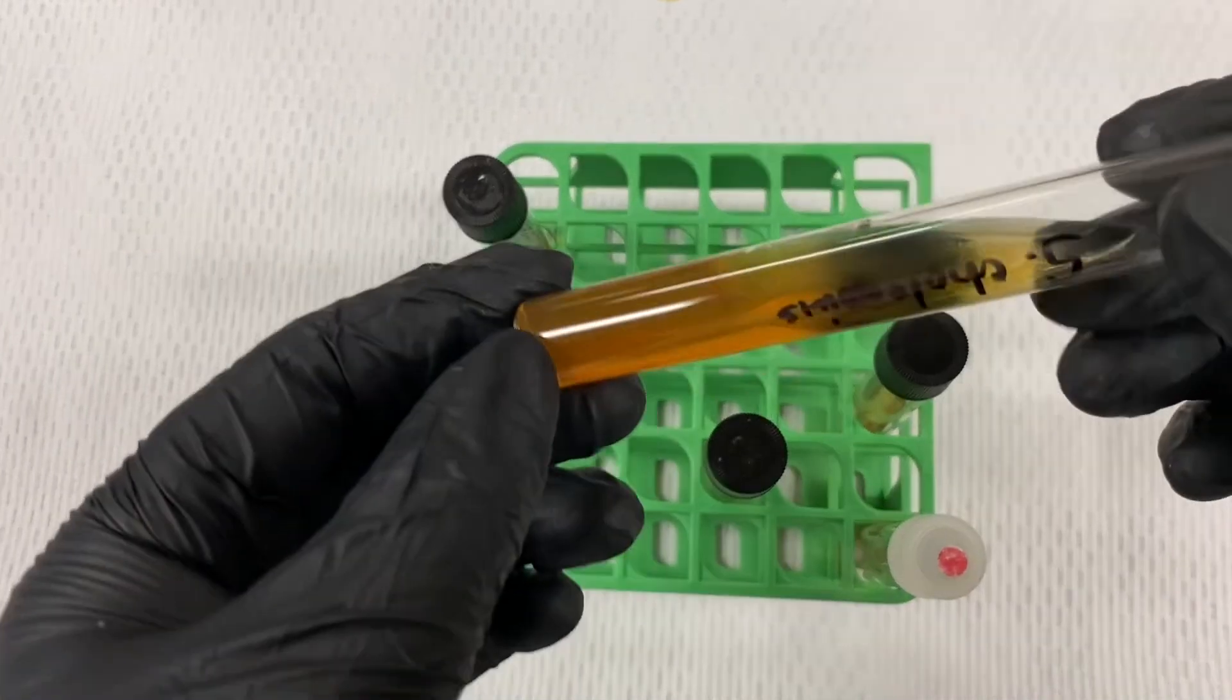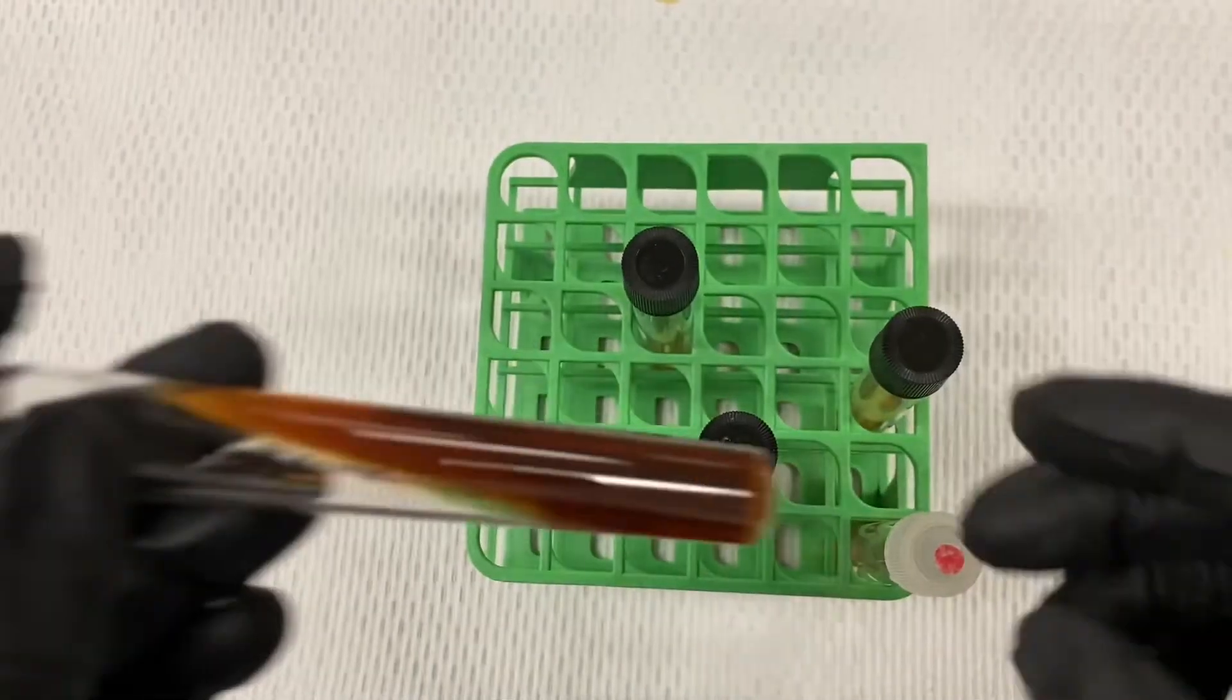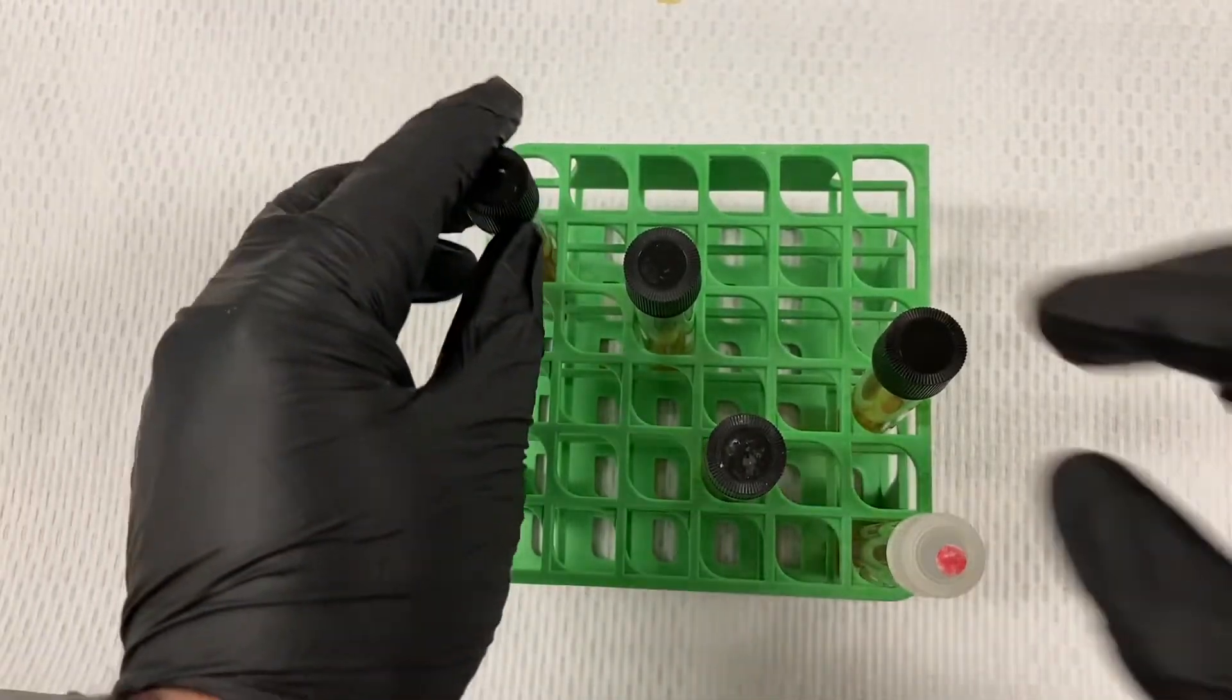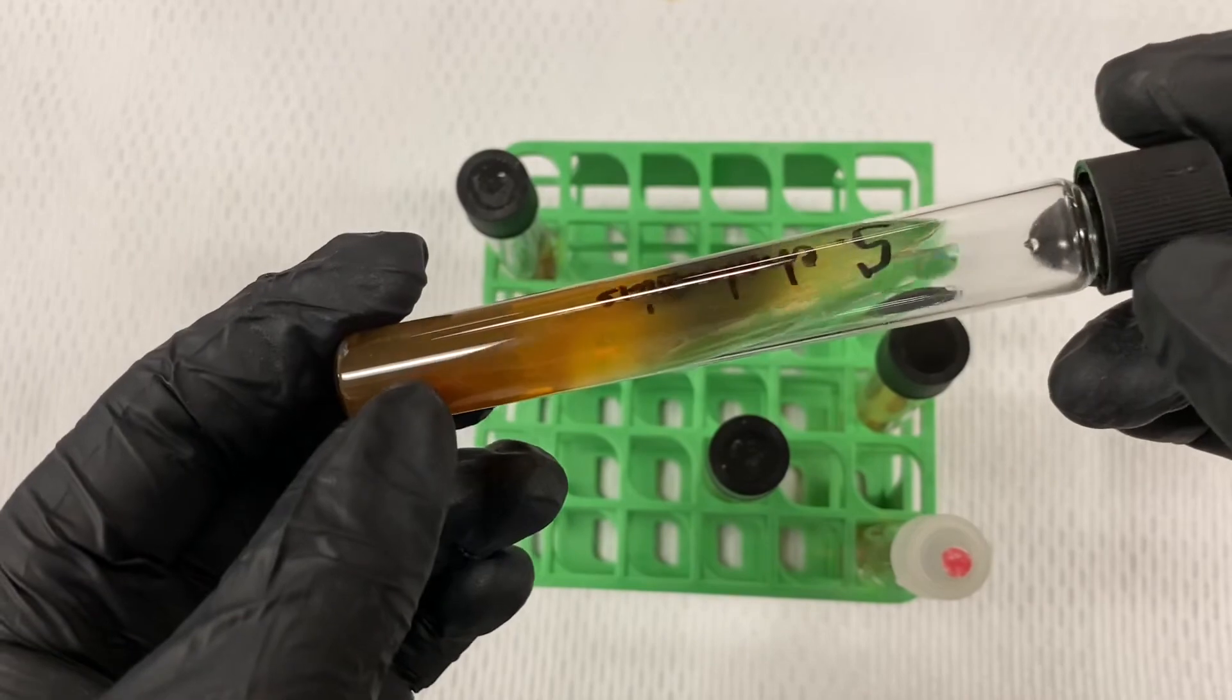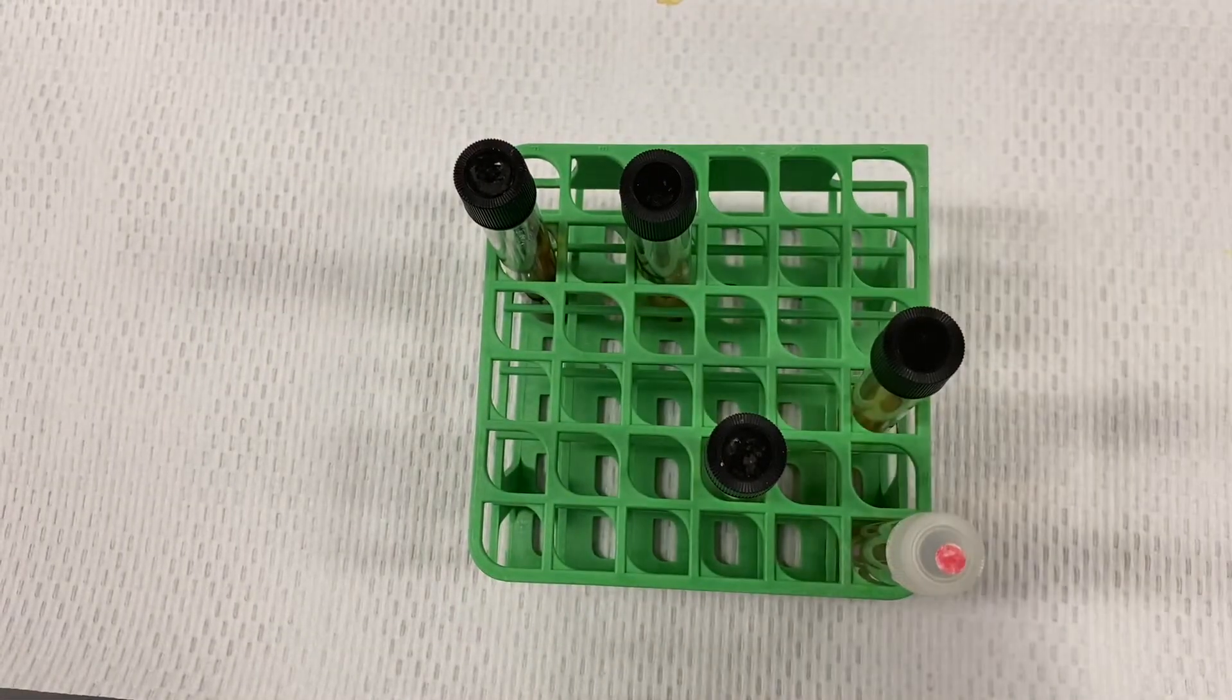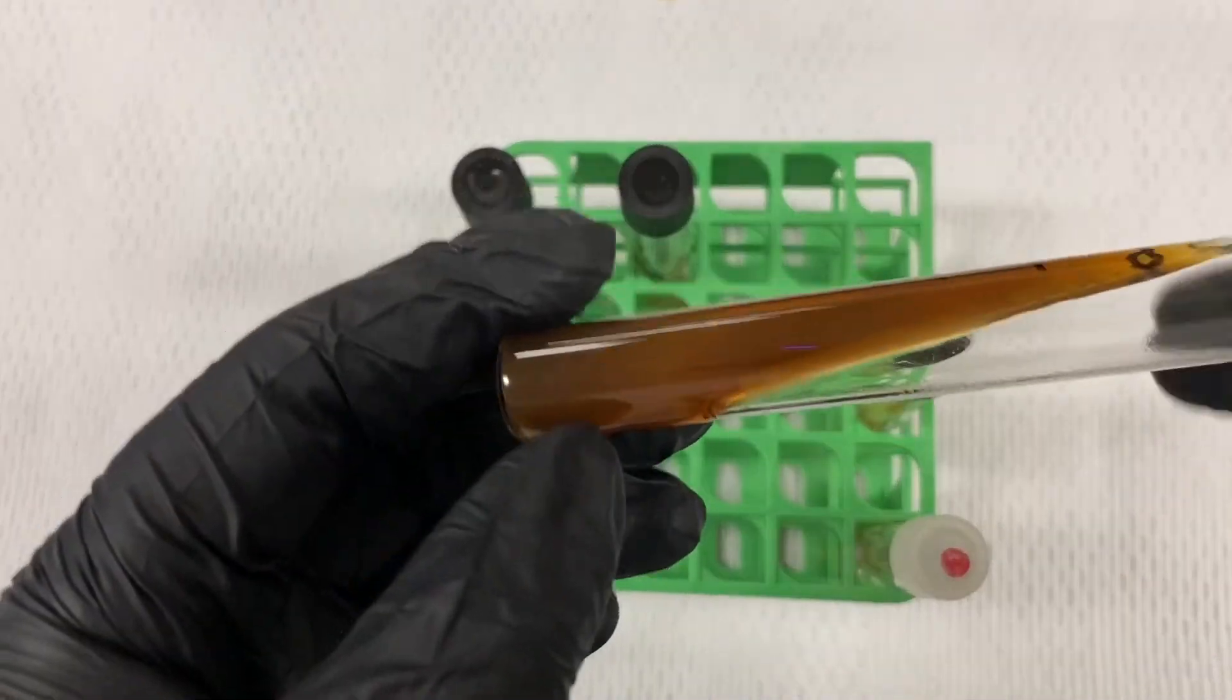And any type of fermentation. So what we look for specifically is if we have no change, it is negative for that particular test. If we see black colors, this is the production of hydrogen sulfide, in other words positive for the removal of sulfur from cysteine. And at times what we're also looking for is the presence of gas.